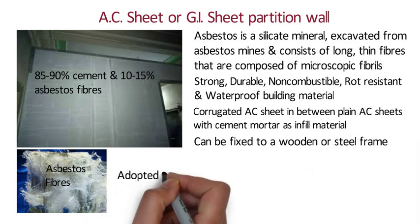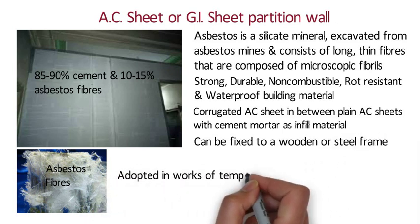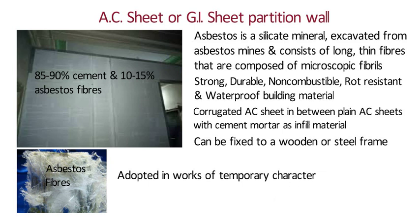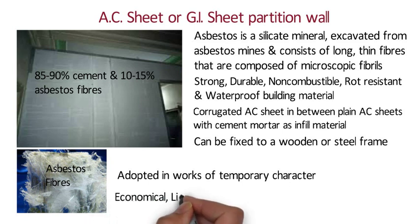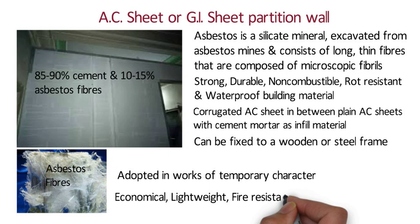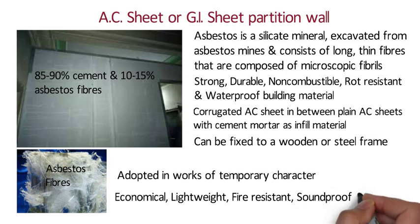AC/GI sheet partition is mostly adopted in works of temporary character. This type of wall is economical, lightweight, fire resistant, soundproof and fairly rigid if constructed properly.